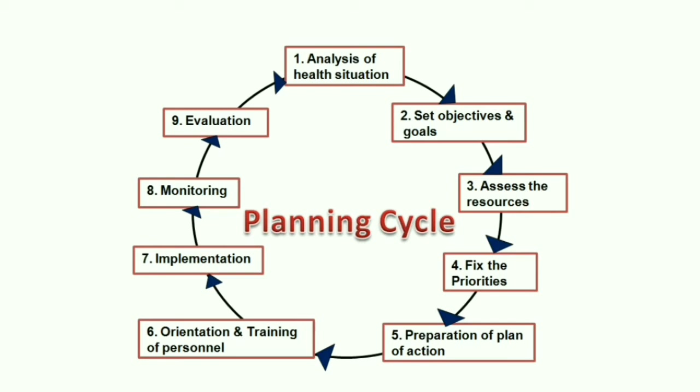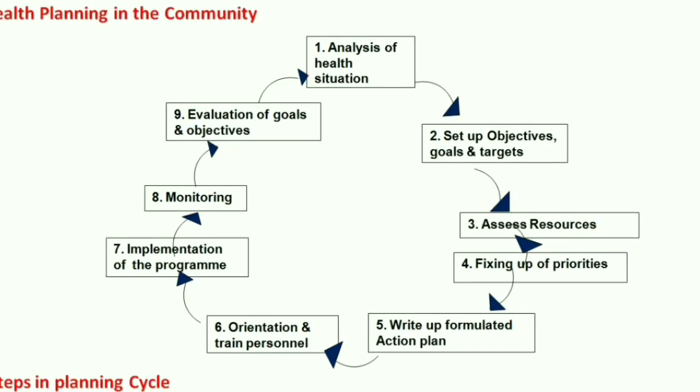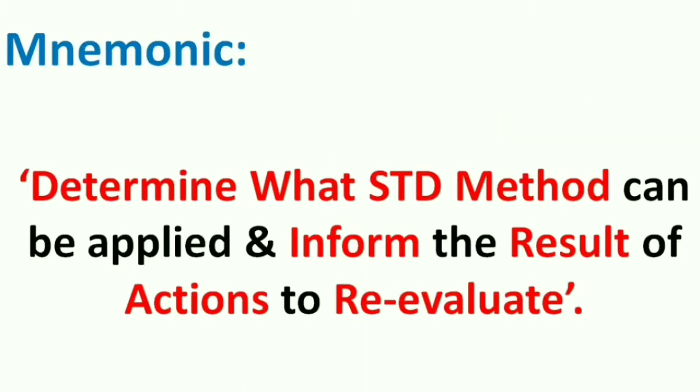You can use this diagram to explain the planning cycle in detail for any programs planned in the community: analysis of health situation or problems, set objectives and goals, assess resources, fix priorities, formulation of action plan, orientation and training of health personnel, implementation, monitoring, and evaluation. The next topic is the general steps of evaluation of health services.